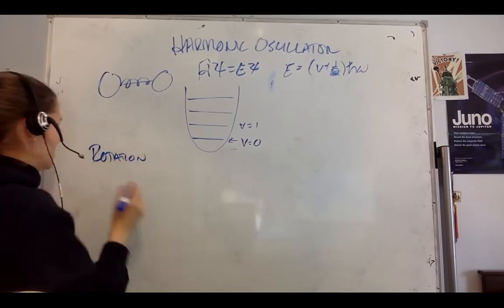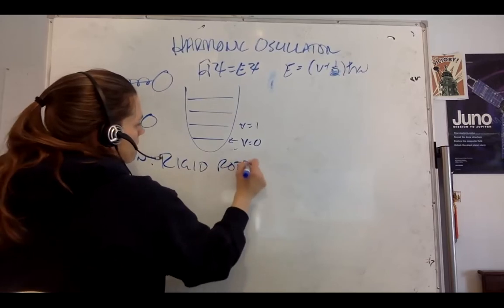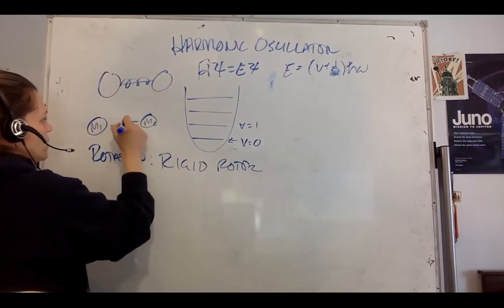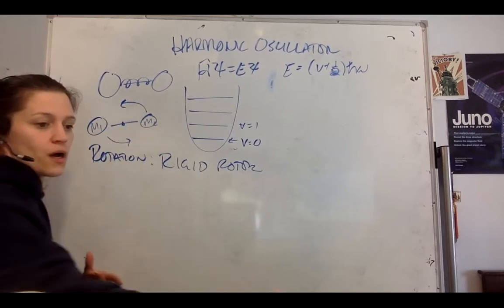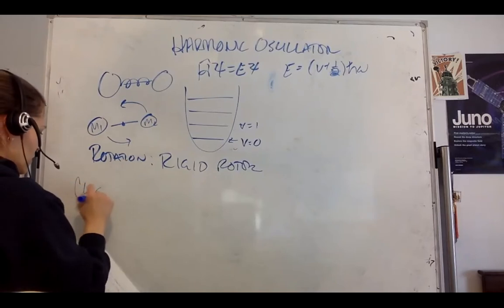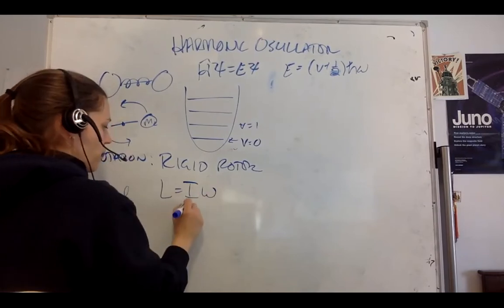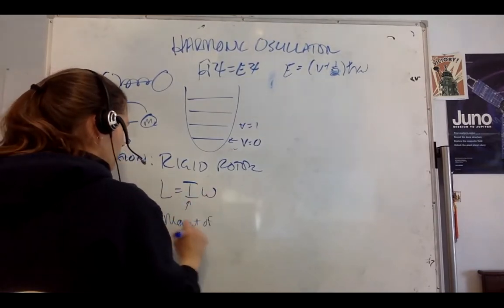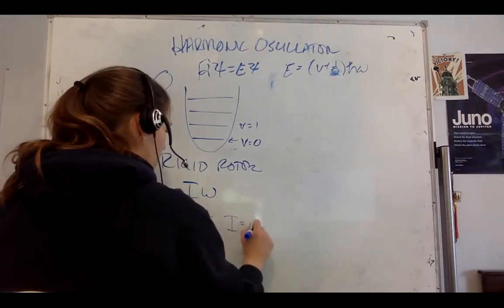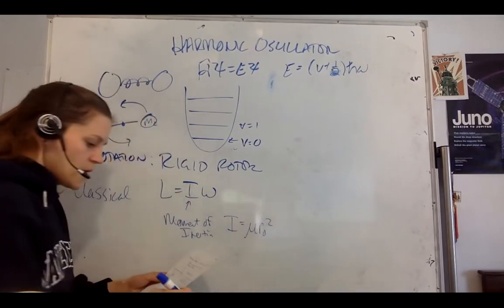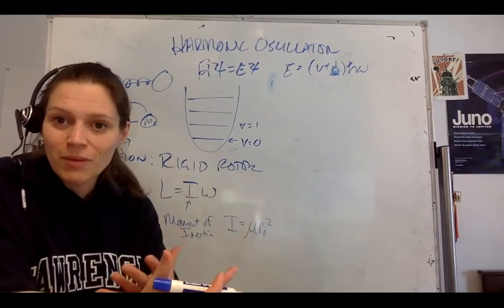We can't, so we introduce a rigid rotor: mass one, mass two, some axis of rotation, and it's spinning. In classical physics, we would have L = I·ω, where I is your moment of inertia. I equals the reduced mass times r₀ squared, taking into account the various masses that you have.